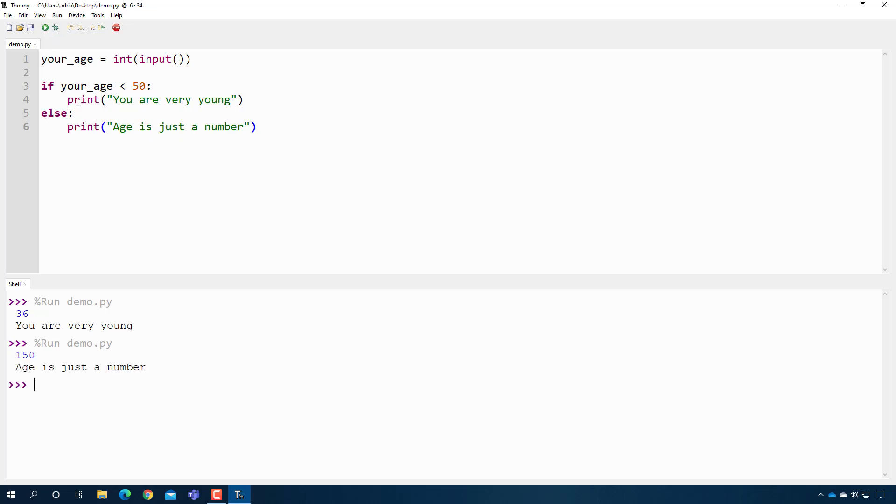So to actually show you how Python makes that decision, what I can do here, and this is a little bit advanced, if I double click on the line number it'll create this red dot, and right next to play if I press this bug this actually enters the debugger.